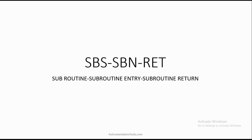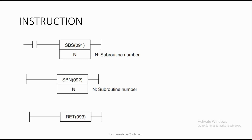We have three instructions: subroutine call (SBS), subroutine entry (SBN), and subroutine return. All three instructions must be used together. To use the subroutine concept, you need all three in your ladder logic. You identify which subroutine you are referring to by using the subroutine number — you assign a number to each subroutine and call it by that number.